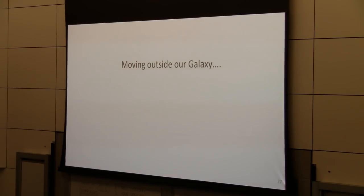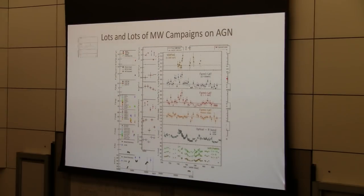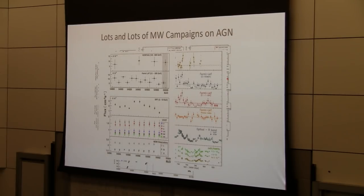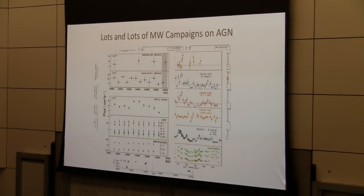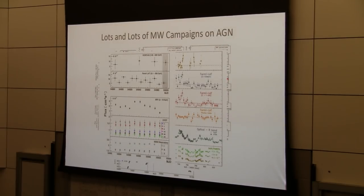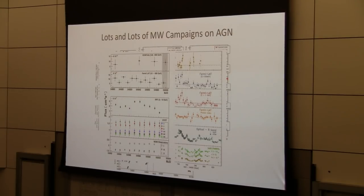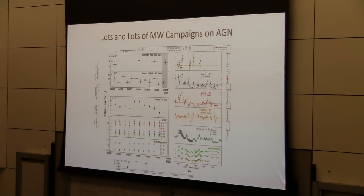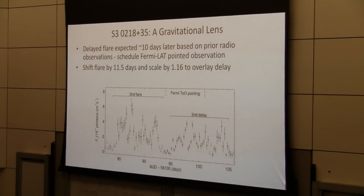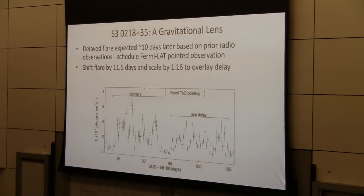So moving outside our galaxy, we've got thousands of active galaxies that we're monitoring all the time with Fermi. This has meant that we've had lots of multi-wavelength campaigns where we coordinate with observers from radio to optical to X-ray all the way up to the gamma ray to study how these objects behave as a function of time and energy across the entire electromagnetic spectrum. If I had to draw a single conclusion from everything that we've done, is that none of our simple pictures of how these objects worked fit all the data.